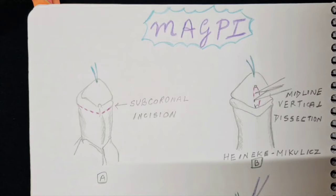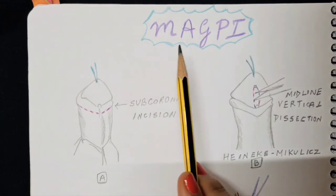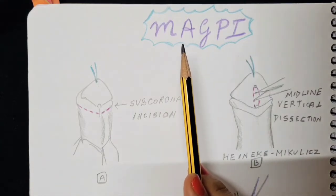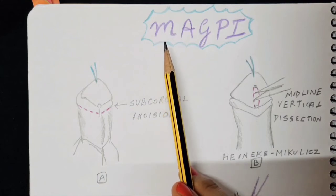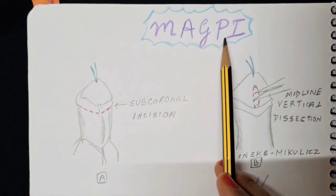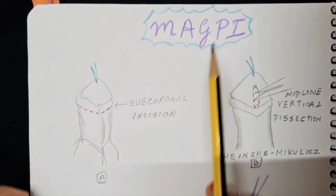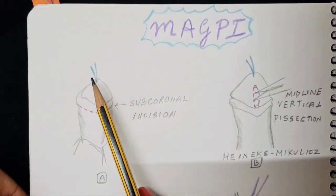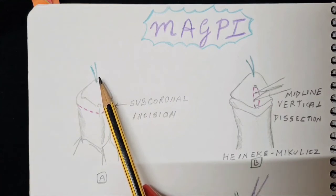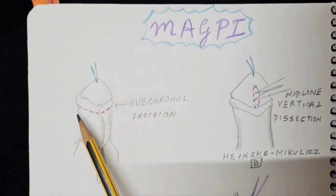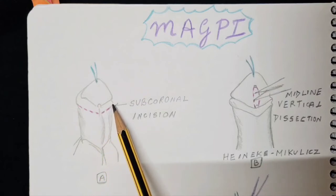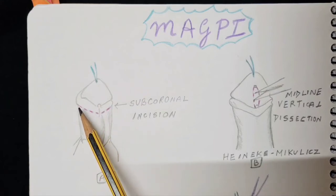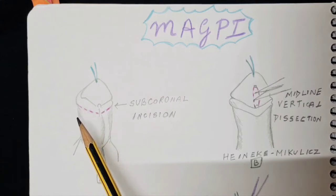Welcome back to the hypospadias series. As per many requests, we will now cover the individual techniques and start with the MAGPI approach. This technique is used for the distal-most cases of hypospadias. MAGPI stands for Meatal Advancement and Glandsplasty Incorporated. For this technique, the first thing is that a stay suture is taken at the distal-most tip of the glans, followed by degloving of the penile shaft by a subcoronal circumferential incision, which also helps to release the chordee.